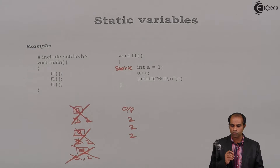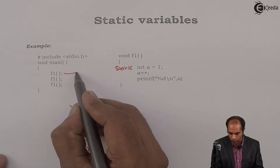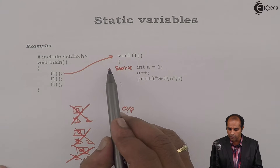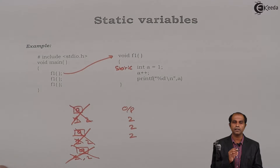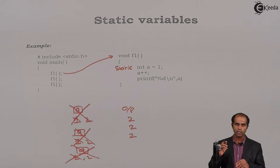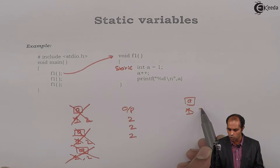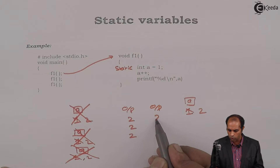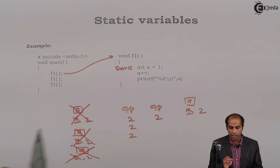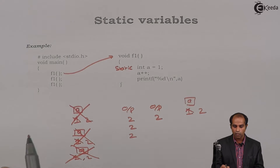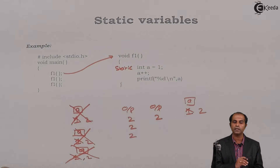What does the keyword static do to this declaration? When F1 is called for the first time, static declarations will be executed. Since the function is called for the first time, the static declaration creates a variable A, sets it to 1, changes it to 2, and prints the value — output is 2. But when the function ends, static variables are not destroyed. Static variables are created when the function is called for the first time but are never destroyed at the end of the function.